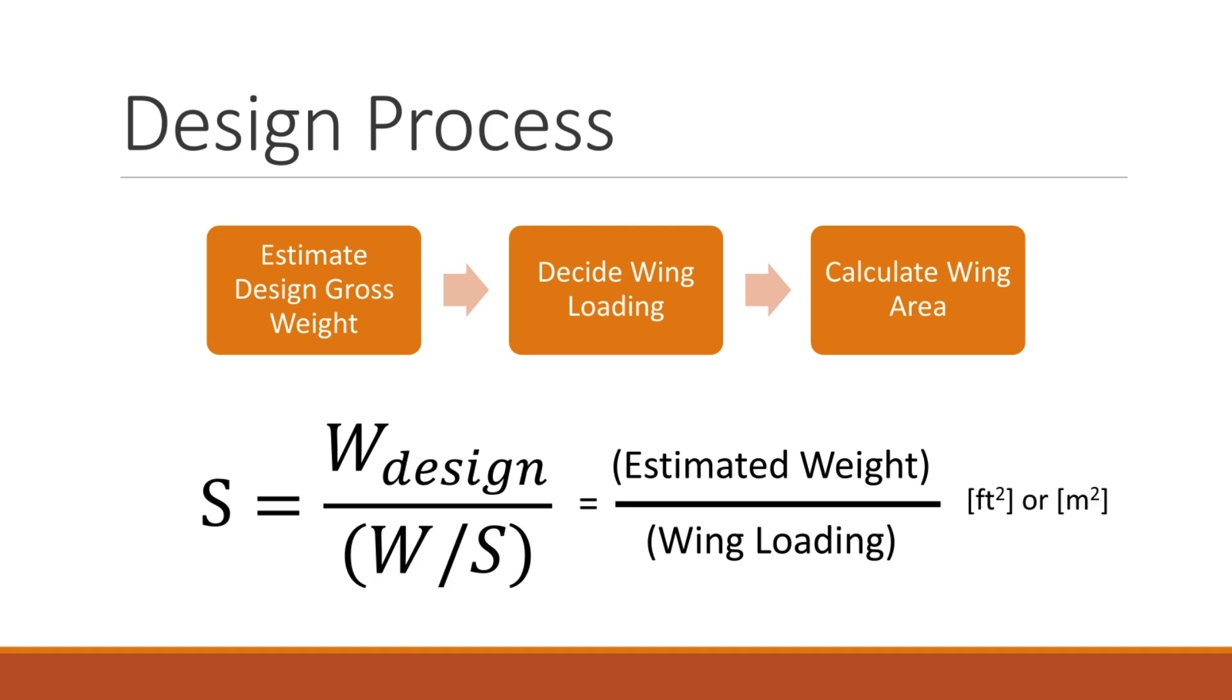Now, let's look at the design process. Step 1, estimate your design's gross weight or all-up weight. Step 2, decide your wing loading based on how you intend to fly this plane. Step 3, calculate wing area by solving for S using this formula. If you already have the wing designed, you can calculate the wing loading and estimate what kind of flight characteristics the model will have.